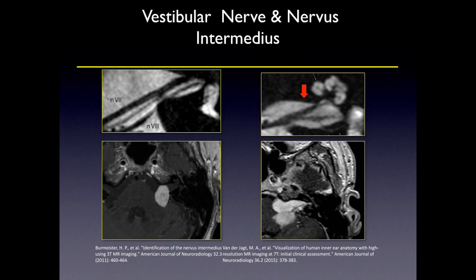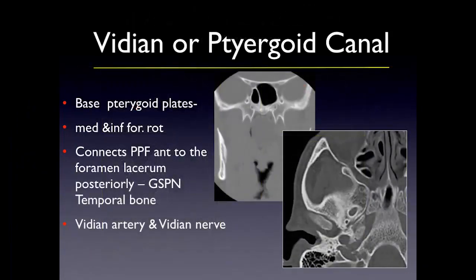Most schwannomas arise from sensory nerves. If you have an eighth nerve schwannoma, it arises from Scarpa's ganglion inside the internal auditory canal and looks like ice cream filling a cone and spilling over — it widens the porous acusticus. It usually comes along the vestibular or inferior vestibular cochlear nerves, so they're really vestibular schwannomas. The seventh nerve schwannoma looks more like ice cream sitting on top of a glass — we'll come back to that.